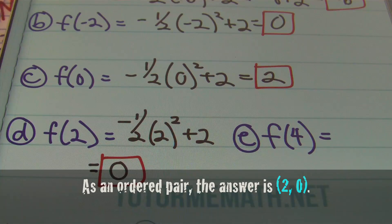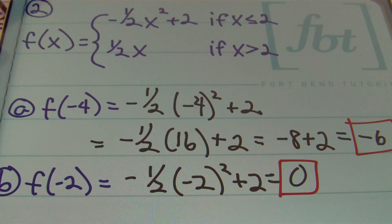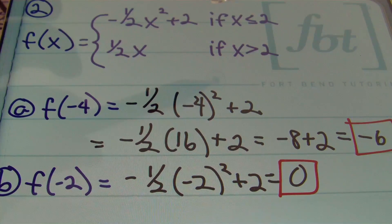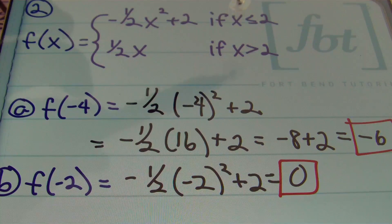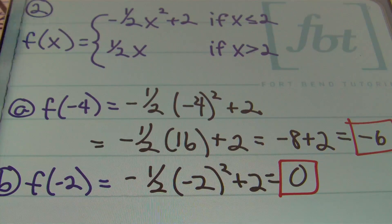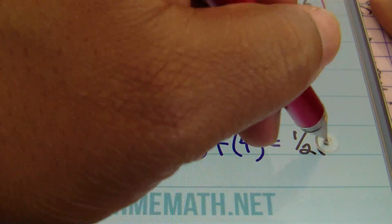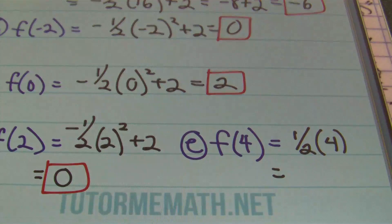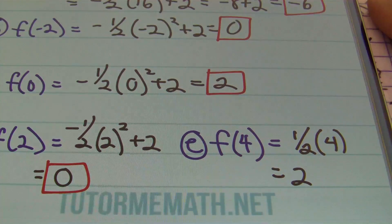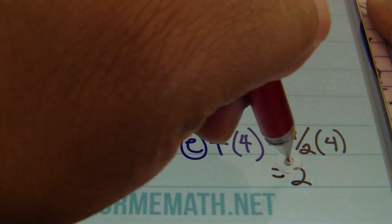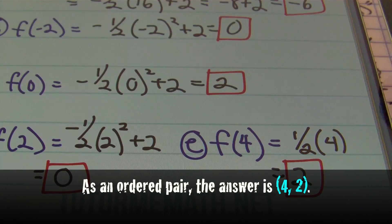For part e, x equals four. Four is greater than two, so we use the second part of the function: one half x. We take half of four, which is two. The answer is two. That completes problem number two.